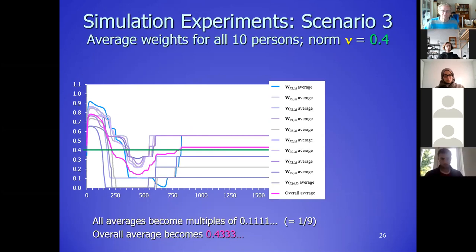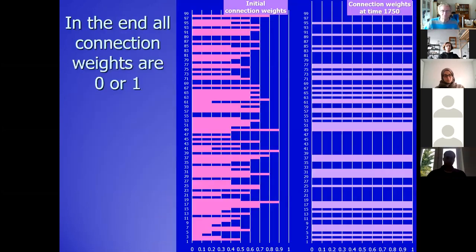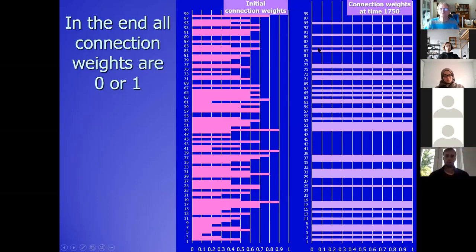At the end, after a long time, the situation is that most contacts are all or nothing — initially gradual connections, but after a long time some are zero and some are one or close to those values.